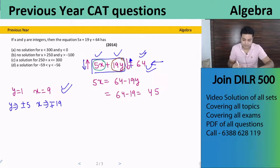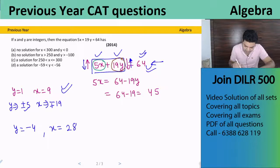Now let's check all the options. The first solution says no solution for x less than 300 and y less than 0. So if we find the next solution using minus 5, y's value becomes minus 4 and x's value becomes 28. Now you can see y is less than 0 and x is also less than 300, that means this cannot be our solution.